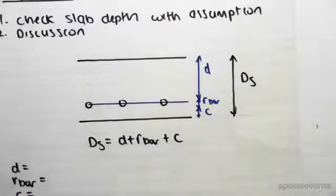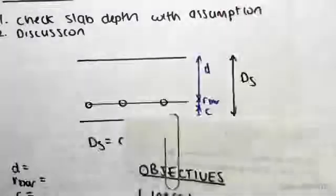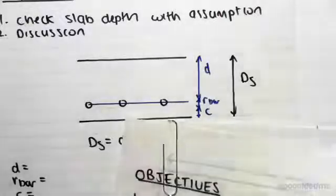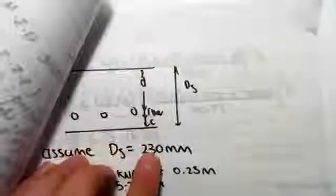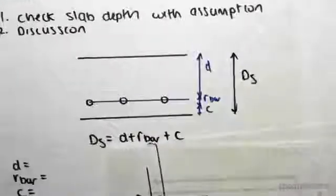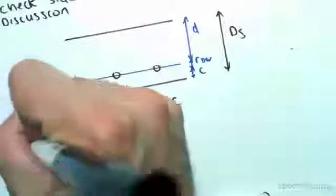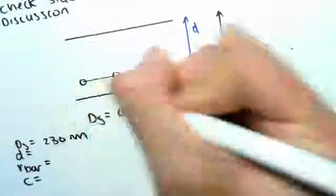Now we assumed at the start that the depth of the section, the total depth Ds was 230 millimeters, so we know that we have an assumed Ds of 230 millimeters.